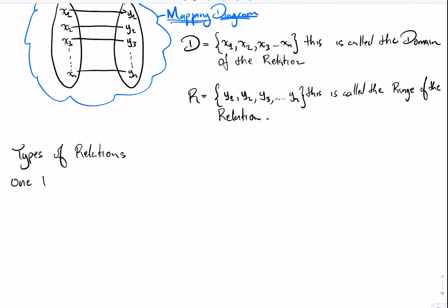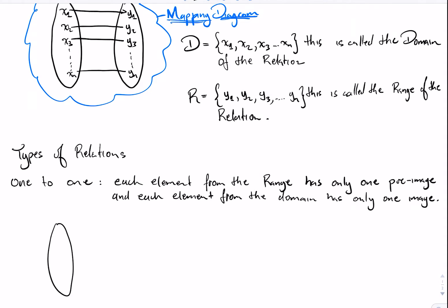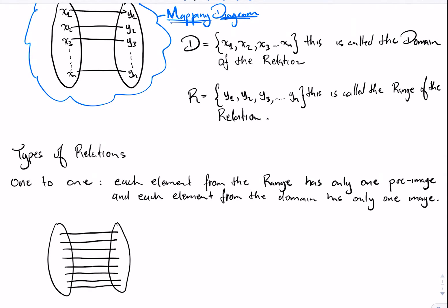We now move on to look at the types of relations. There are four types of relations, starting with what we call a one-to-one correspondence or one-to-one relation. Each element from the range has only one pre-image, and each element from the domain has only one image — each element corresponds with only one element from the other set.